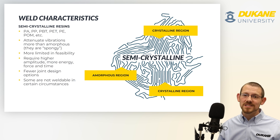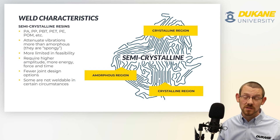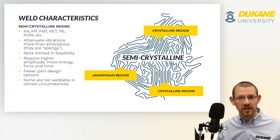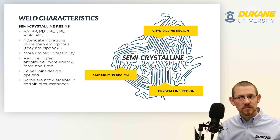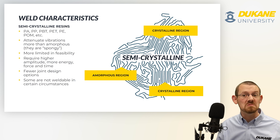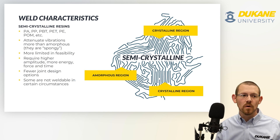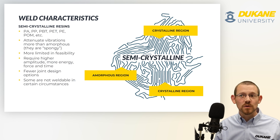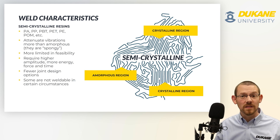There are fewer joint designs available for most semi-crystalline resins as well. Certain high-temperature resins might not work with energy directors, for example. And some of the extreme semi-crystalline resins — things like PEEK, Ryton, or PPS — with really high melting temperatures, sometimes can't be welded at all. So in general, if you're using a semi-crystalline resin for your product, you have to really consider whether ultrasonic welding is going to be the optimal bonding process for you.